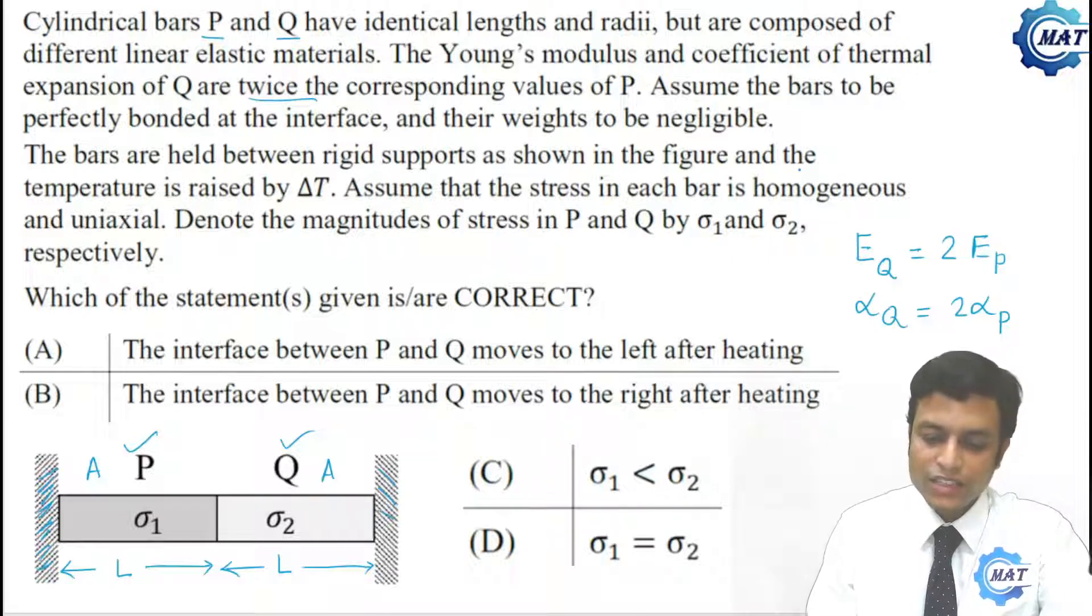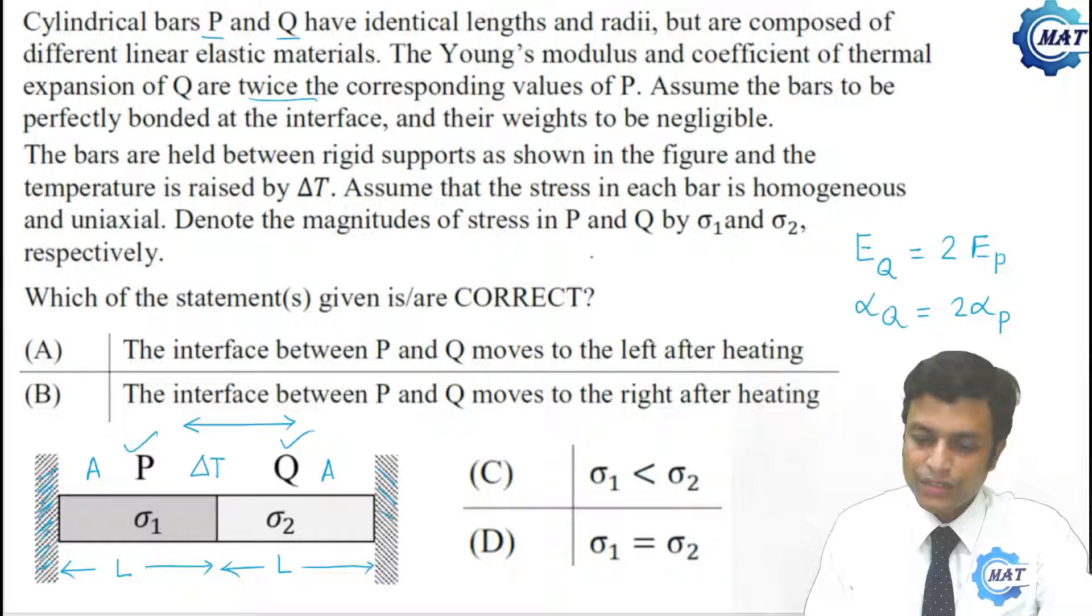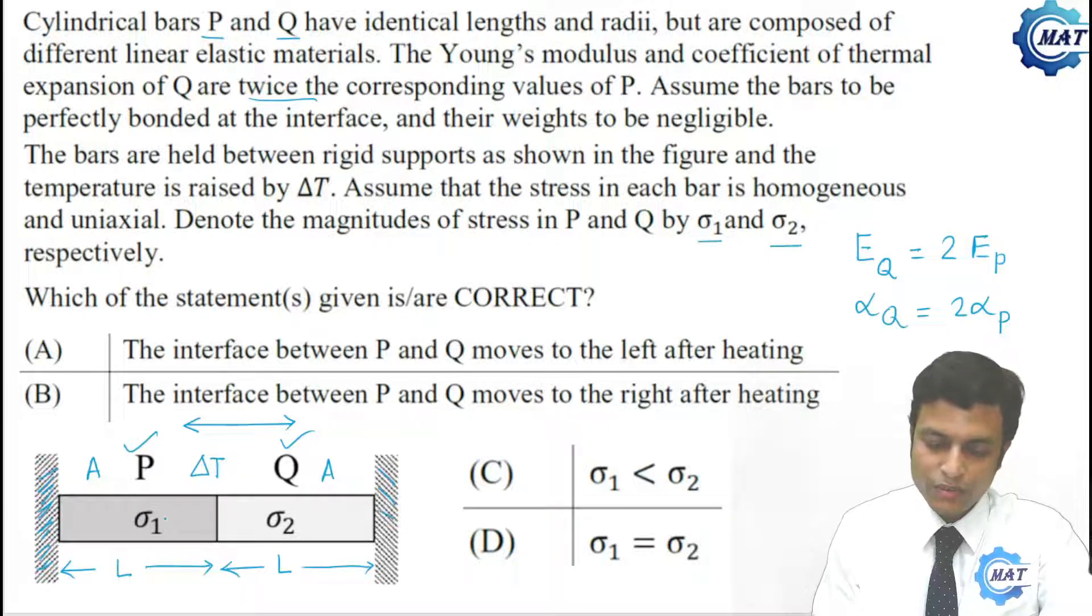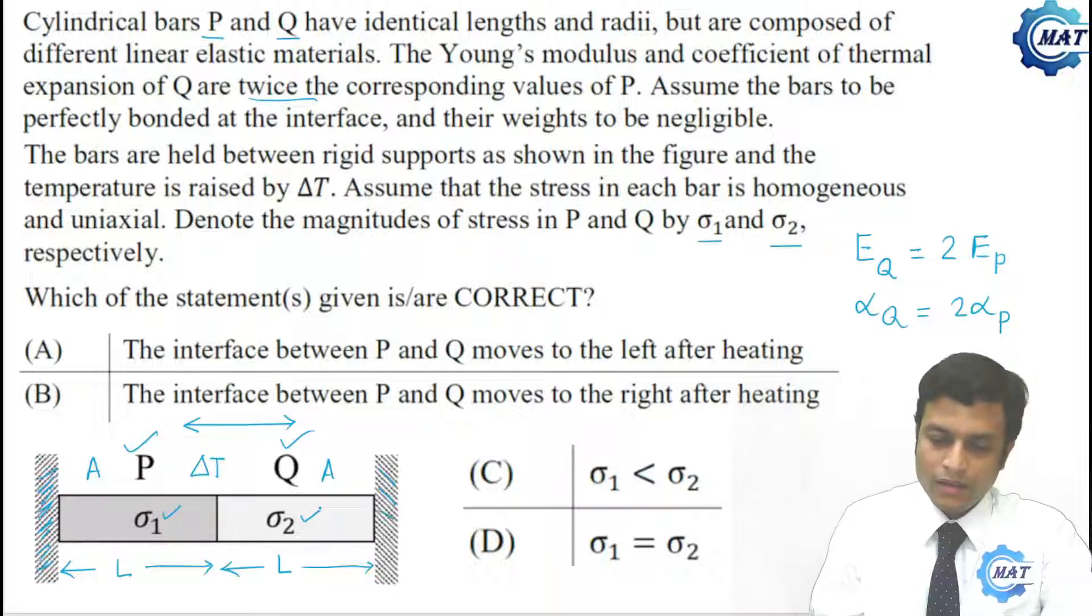And the temperature is raised by delta T. Assume that the stress in each bar is homogeneous and uniaxial. So stresses are only uniaxial stress, that is longitudinal stress. And bars are homogeneous, that is cross-sectional area of the bar at each point is same. Denote the magnitude of stress in P and Q by sigma1 and sigma2 respectively.